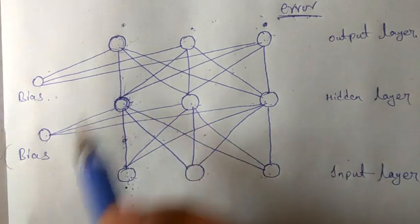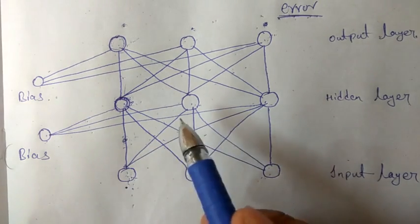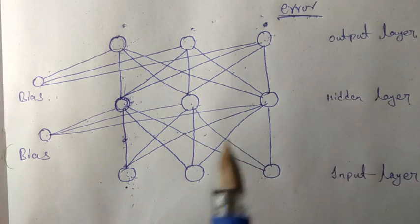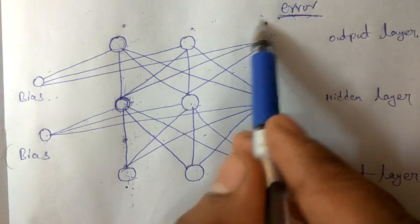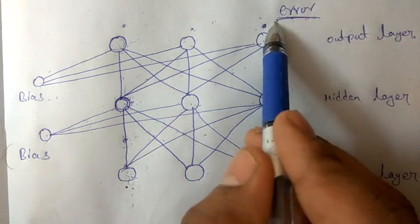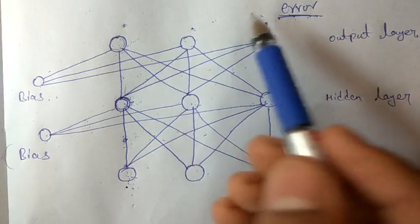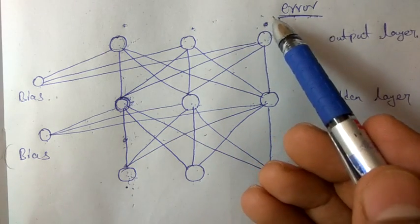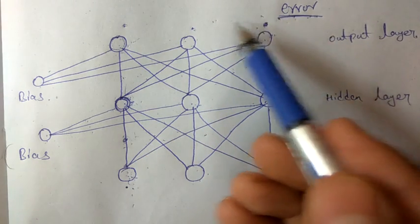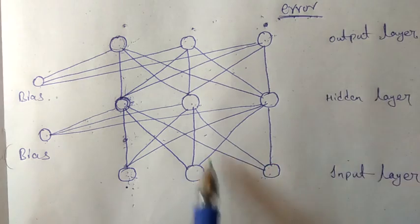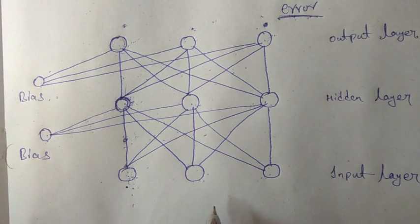We then propagate the error from the hidden layer to the input layer and change the weights there too. By keep on changing the weights, at a particular stage we get weights such that the error is minimum or zero, and our target value equals our output. Then we stop. This is back propagation.